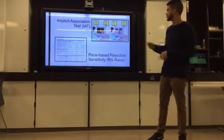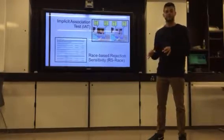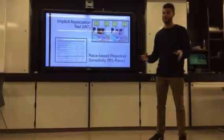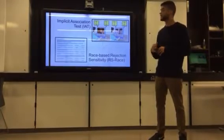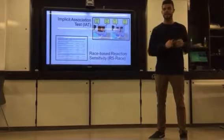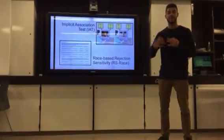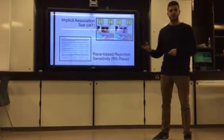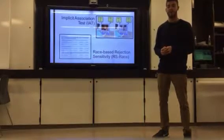So the implicit association test works by having individuals sit in front of their computer and try to categorize individuals in their in-group and out-group at the same time while they're trying to categorize good things and bad things. And it's been found that there's a slower processing time when you're trying to categorize good things and the out-group with bad things and the in-group because humans have a tendency to categorize the good with the in and the bad with the out. And this gives you a number, a quantitative example of how likely an individual is to discriminate someone unlike them.